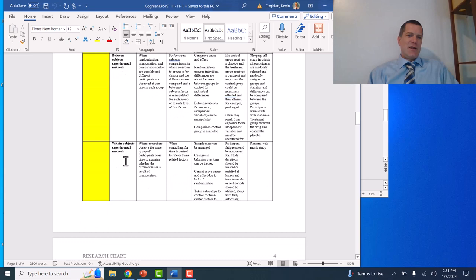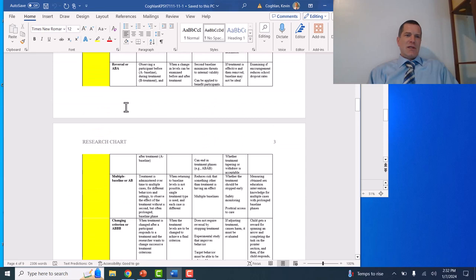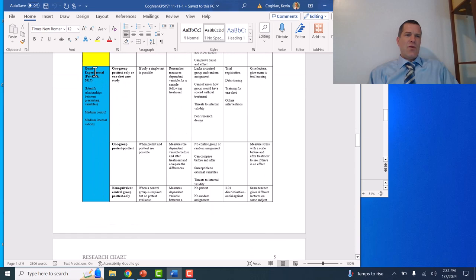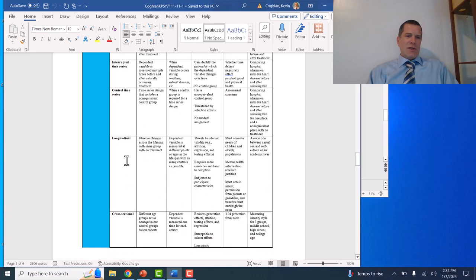These are all just different types of experimental methods. Changing criterion, between subjects, within subjects. You guys don't need all of this right now. It's a sophomore level class. But just to show you, factorial experimental designs, there are so many experimental designs that are generally quantitative in nature. Then you have other types of designs, like a quasi-experimental, one-group post-test only, or one-shot case study.